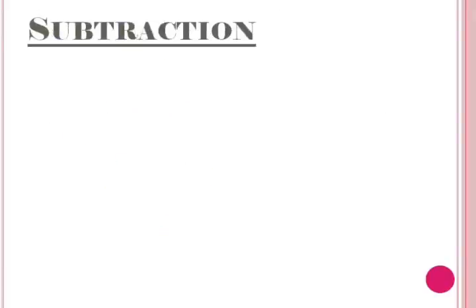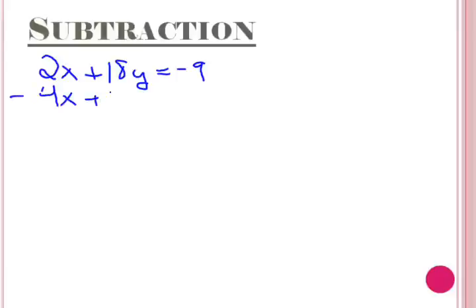Some problems require subtraction instead of addition. See if you can solve this one on your own: 2x plus 18y equals negative 9, minus 4x plus 18y equals negative 27. Please hit pause and then resume when you are finished solving.